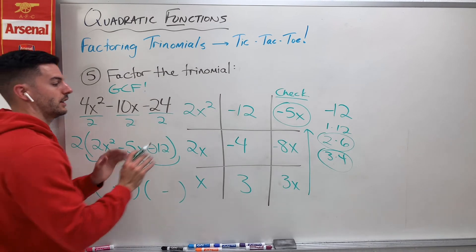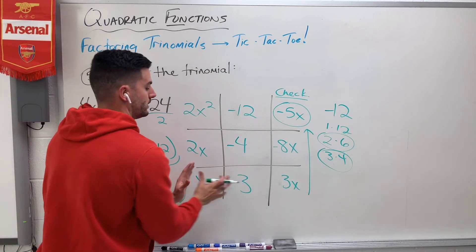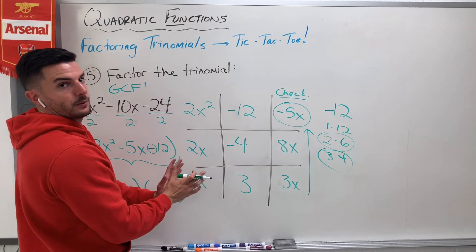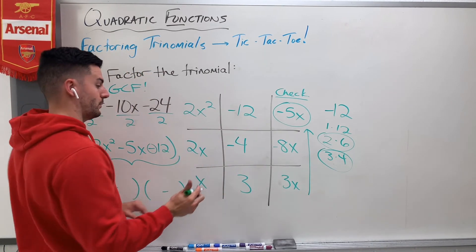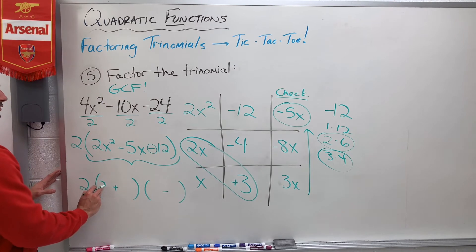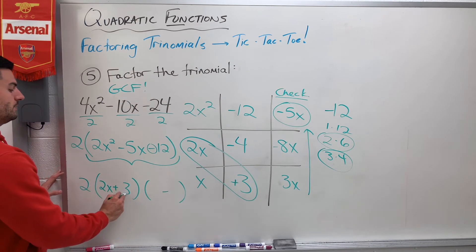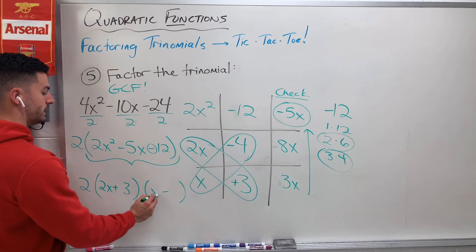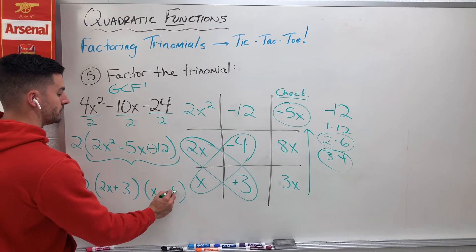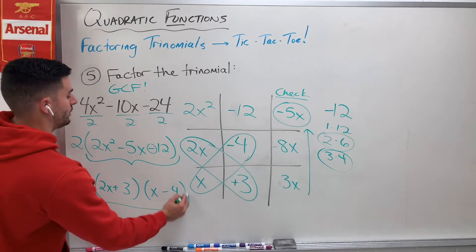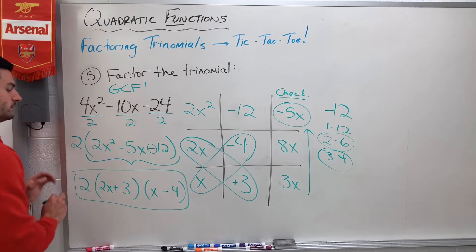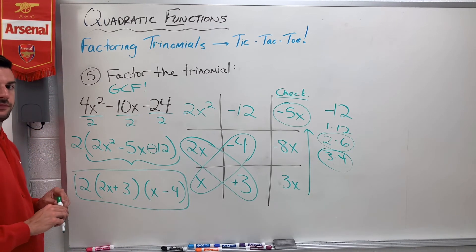If I do 2x times negative 4, that makes negative 8x. x times 3 gives positive 3x. So 3x plus negative 8x — hey, I'm there! Negative 5x. I got it. So that means this is going to be my answer. I just have to group it the right way, so it'd be 2x plus 3 and x minus 4. There we go, there's my answer.